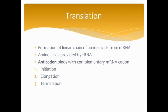Translation involves forming a linear chain of amino acids from the mRNA created from the DNA strand. The amino acids are provided by tRNA. In this process, an anticodon binds with a complementary mRNA codon — it's just the process of taking mRNA and turning it into amino acids in order to make a protein. There's a nice picture in your book about this as well.